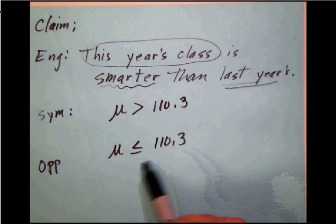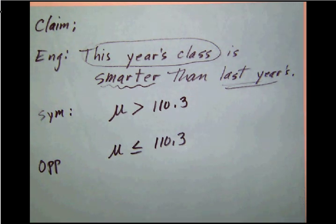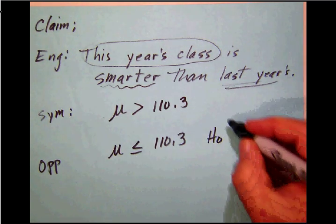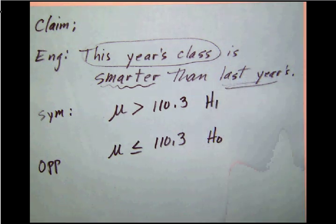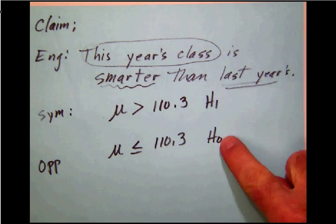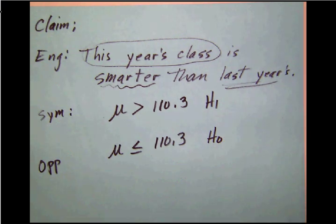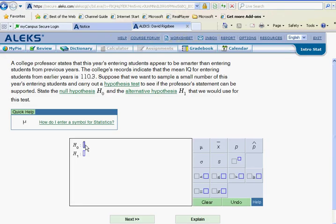And once again here, to find the null hypothesis, we must follow the condition of equality. Watch where the equal sign goes. So this right here is H sub 0, our null hypothesis. And then this one must be the alternate hypothesis. Now, notice that ALEKS always asks for the null hypothesis first, but in this case, it was actually the second statement. So as we go back to put this in, we have to get them in the order that ALEKS wants our answer. So H sub 0 is our null hypothesis. Remember that we're making a claim about a population mean. We're claiming that it is less than or equal to 110.3.